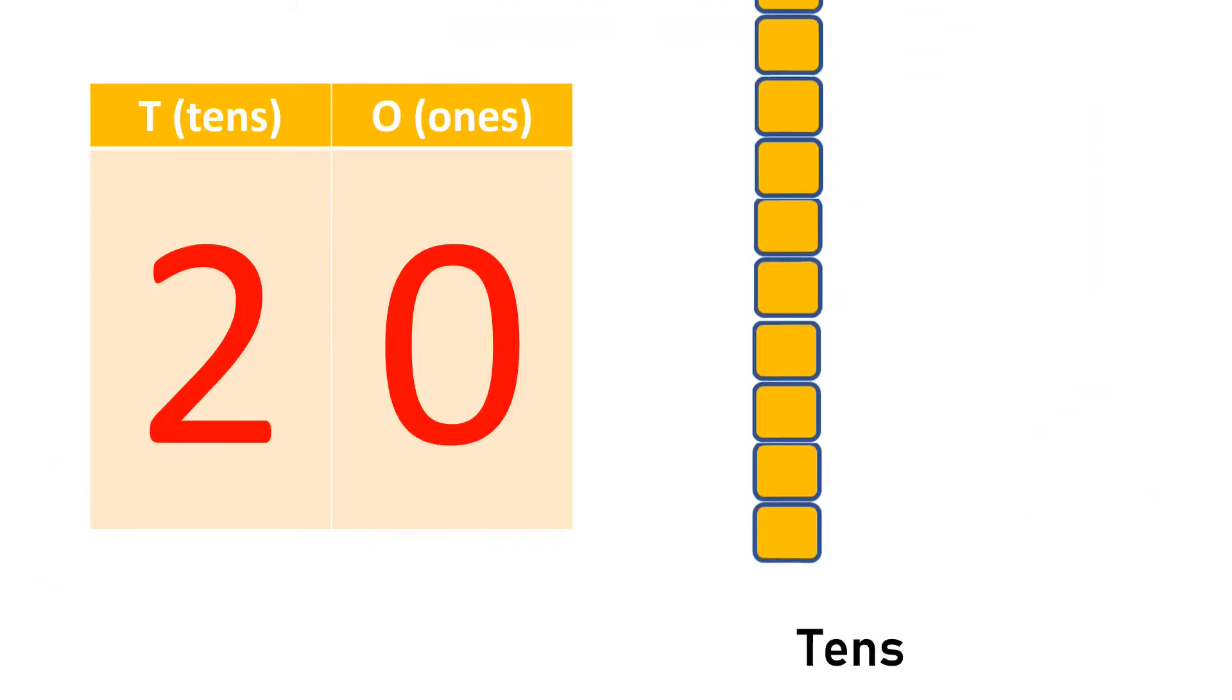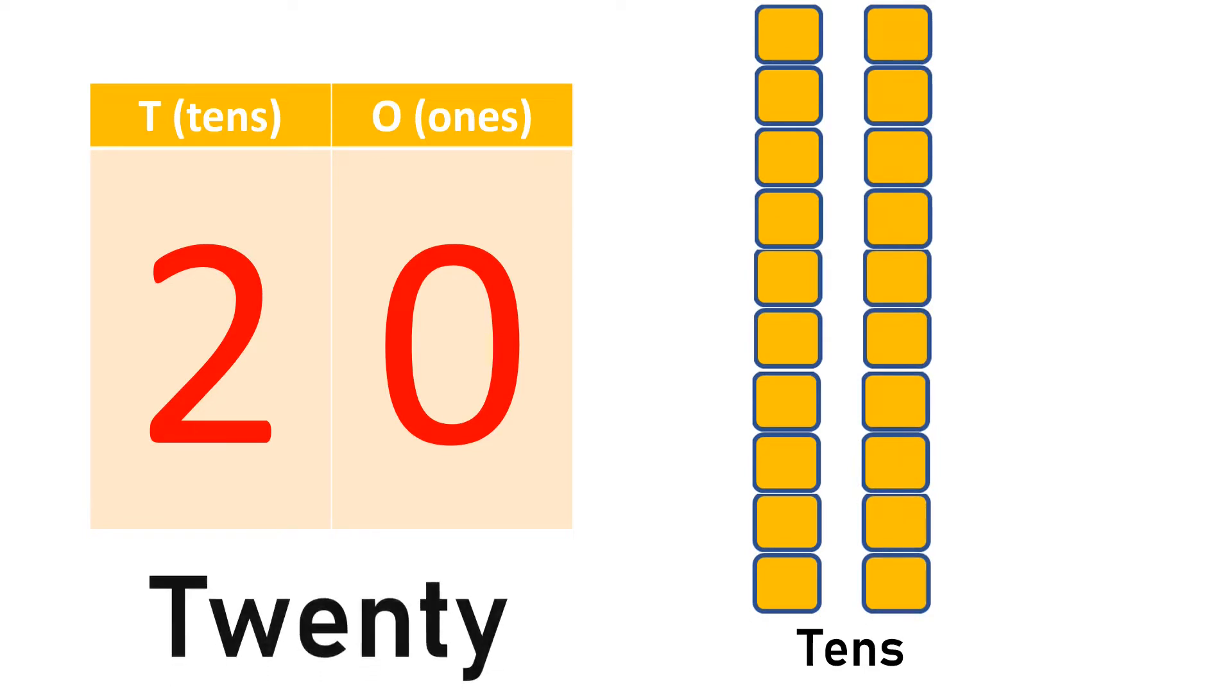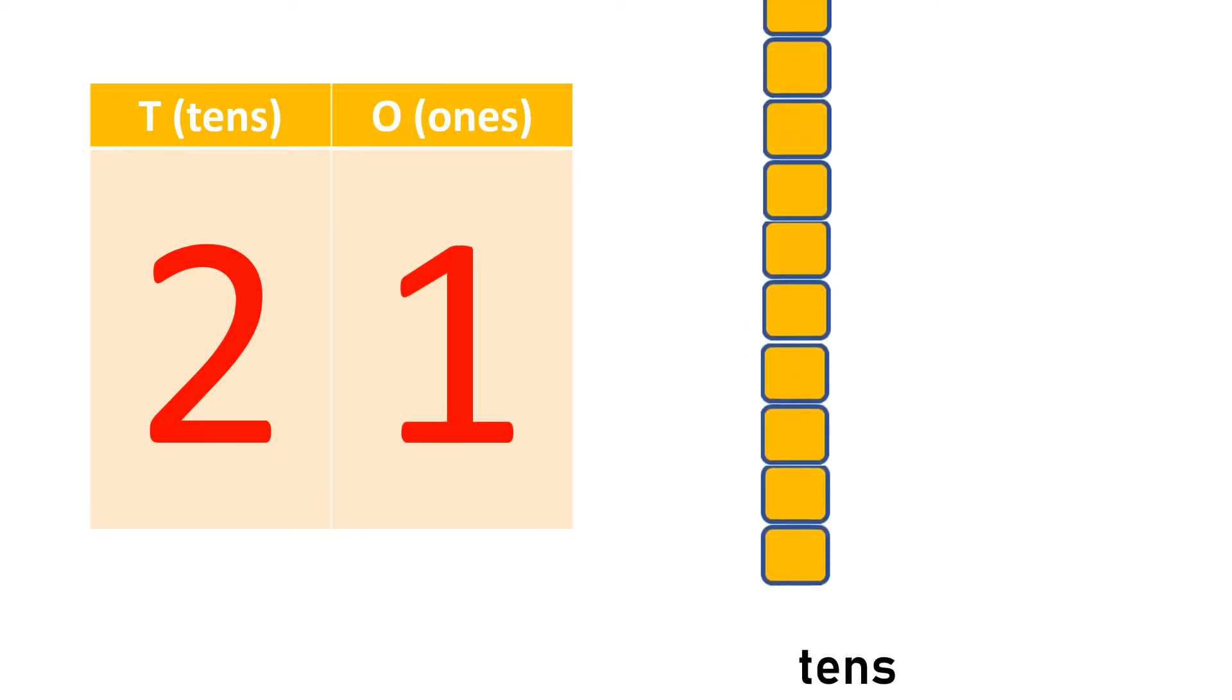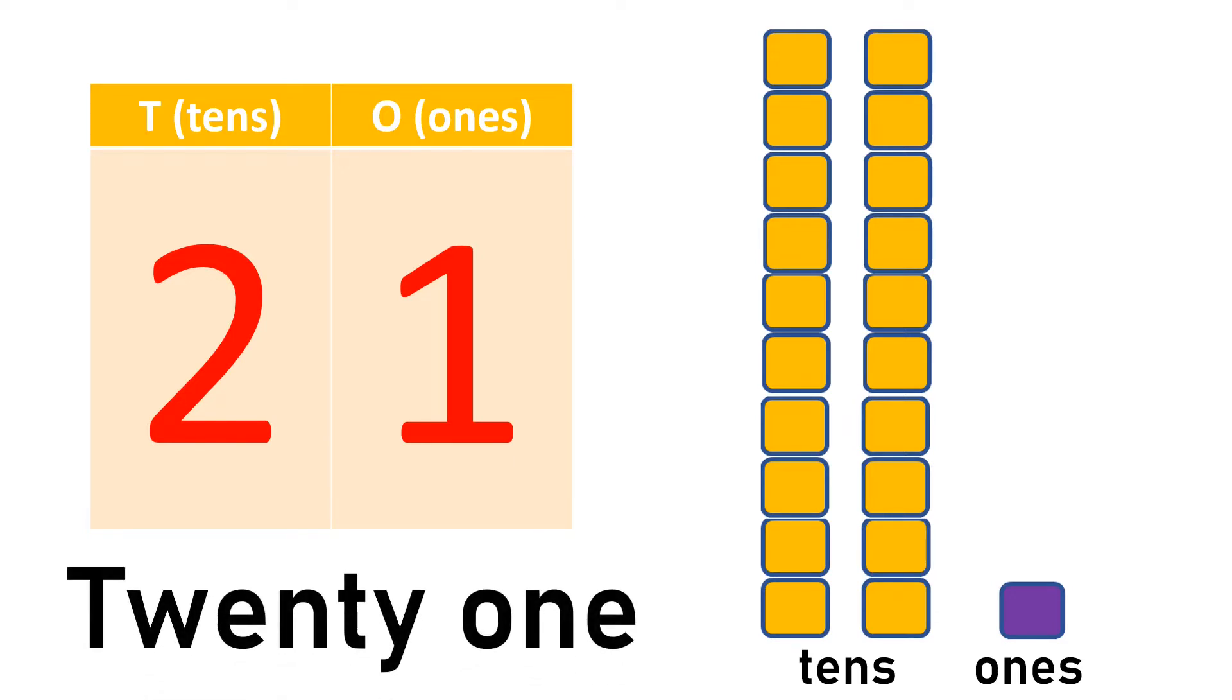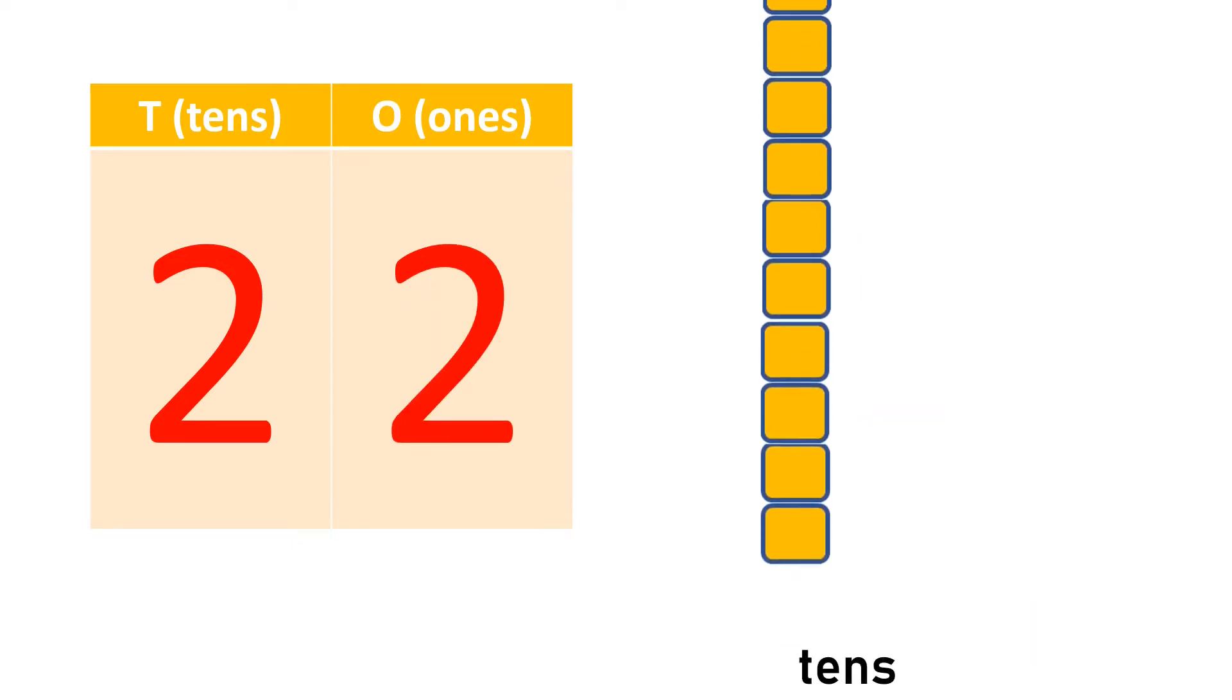2 tens makes 20, TWENTY. 2 tens and 1 one makes 21, TWENTY-ONE.